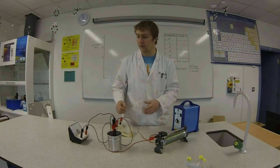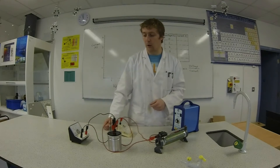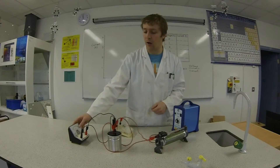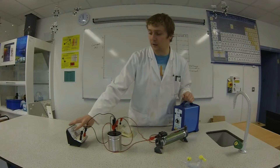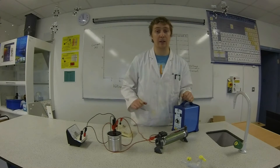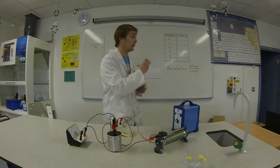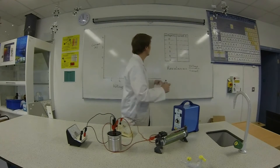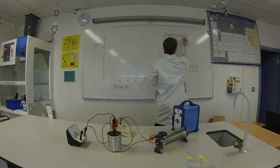Now to start off we're going to measure the voltage across the resistor when there's no power. So we have zero volts and we have zero amps. So that will be our first set of values: zero volts, zero amps.